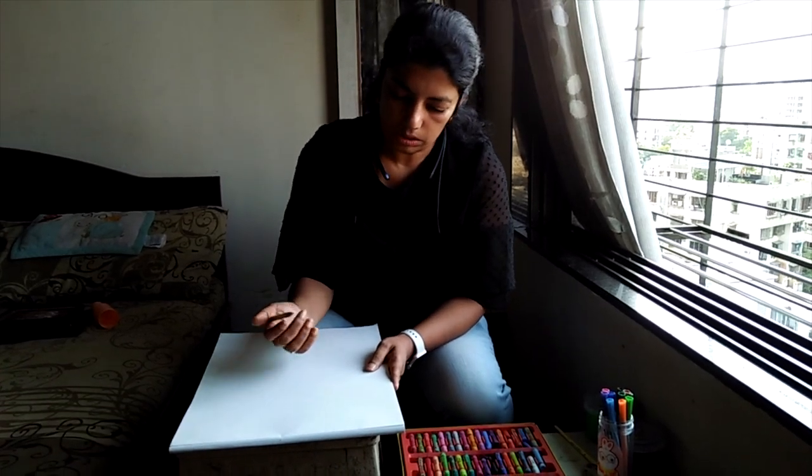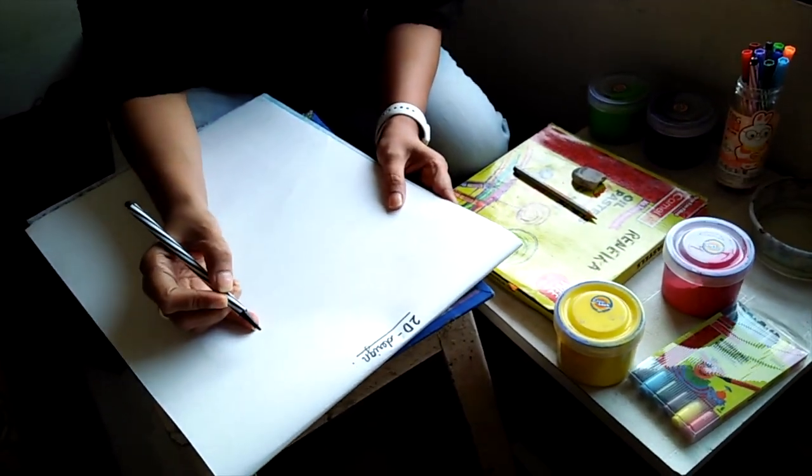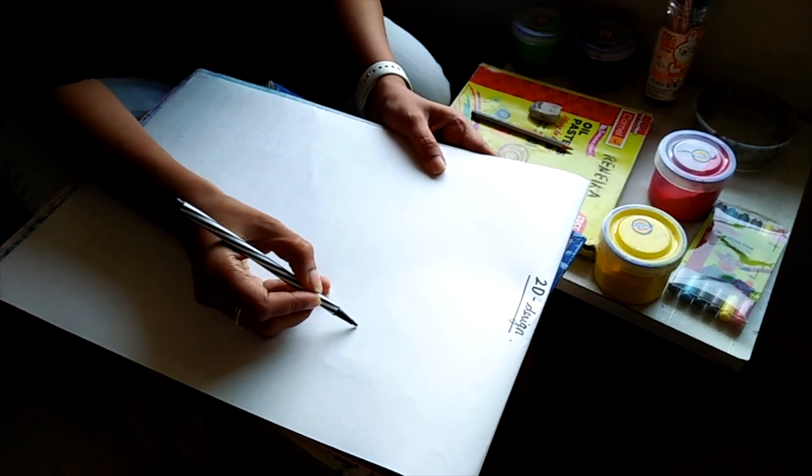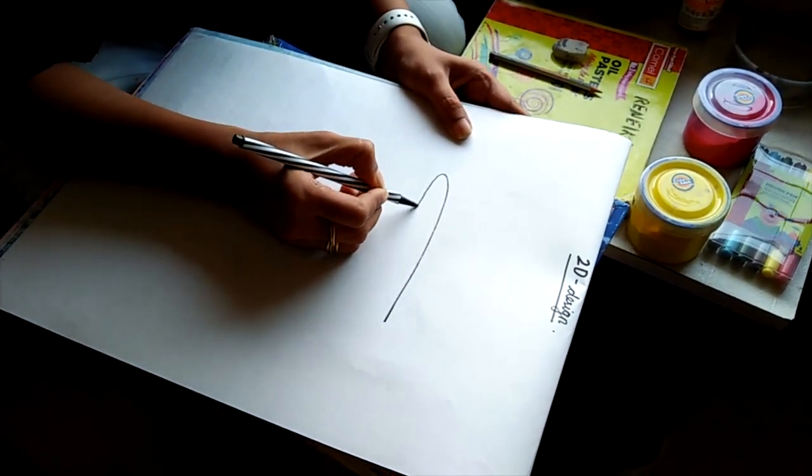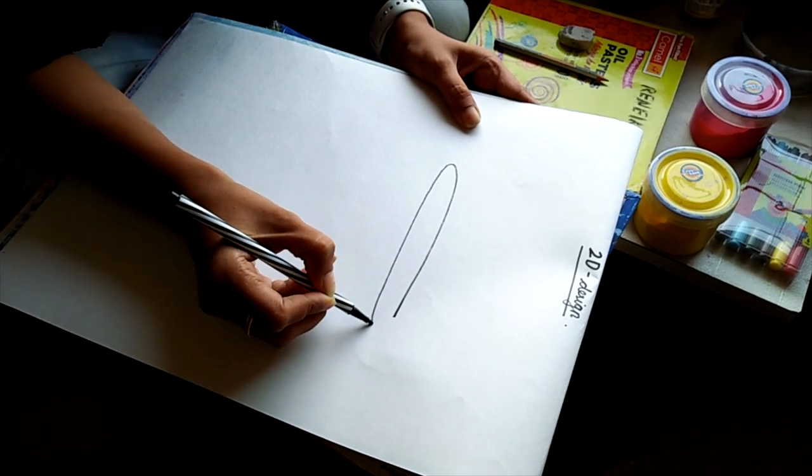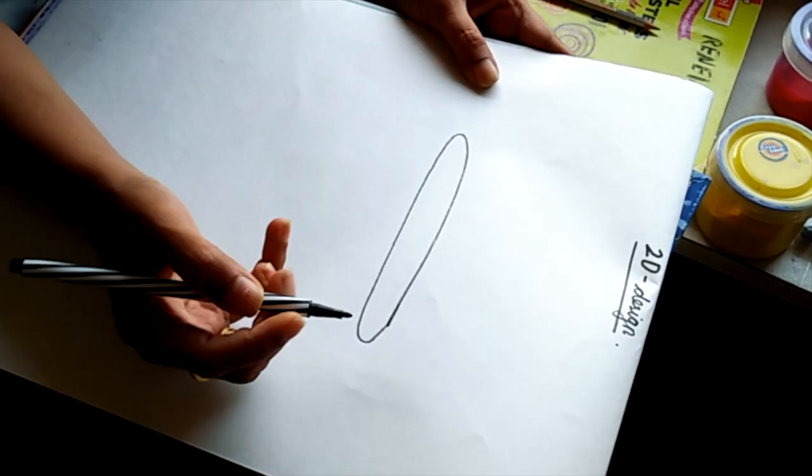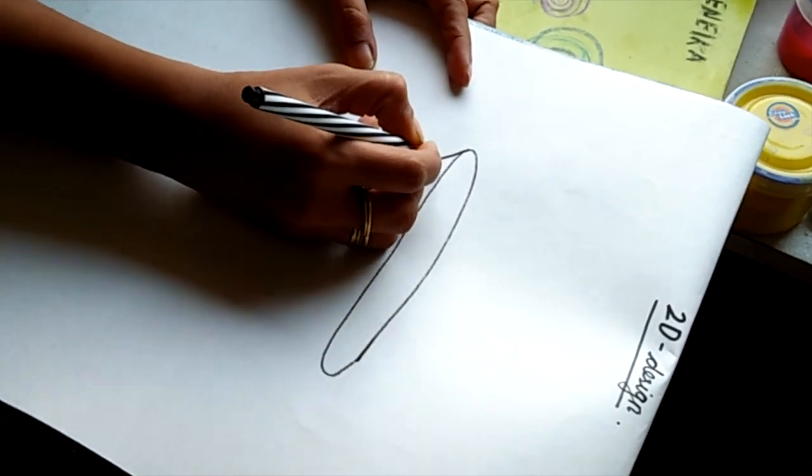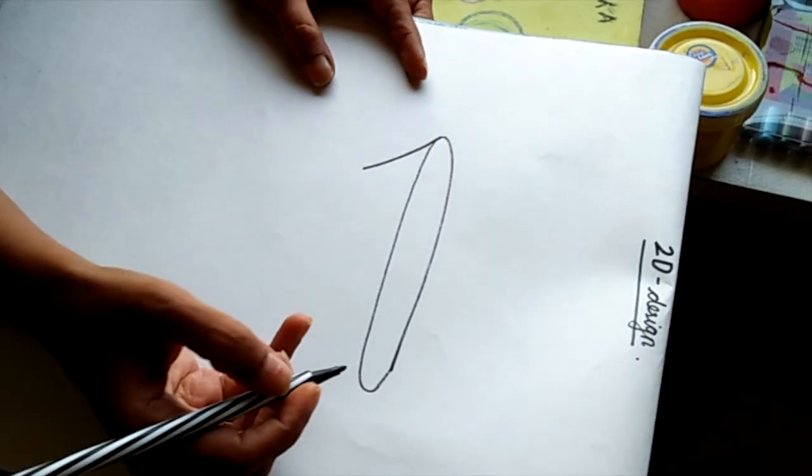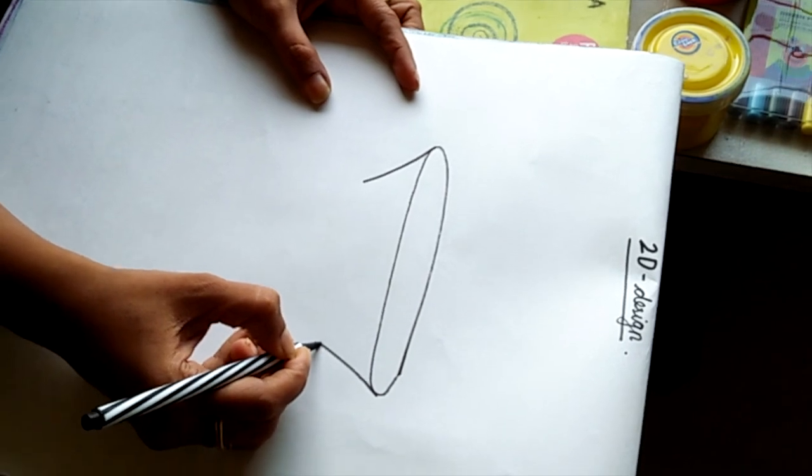Let's start with our 2D design. So since I'm making a flower pot, I am going to start with an oval, a sleeping oval. After that, I am making a slanting line going down, another slanting line going down.